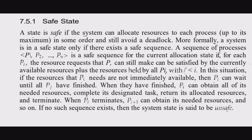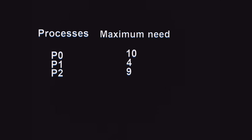There are three methods to avoid deadlock. First is the safe state method. A state is safe if the system can allocate resources to each process in some order and still avoid a deadlock. Consider three processes P0, P1, and P2 with maximum needs of 10, 4, and 9 respectively, and only 12 magnetic tape drives available.